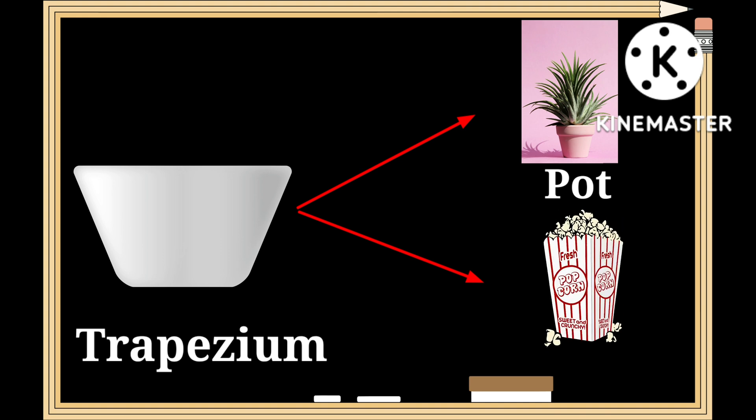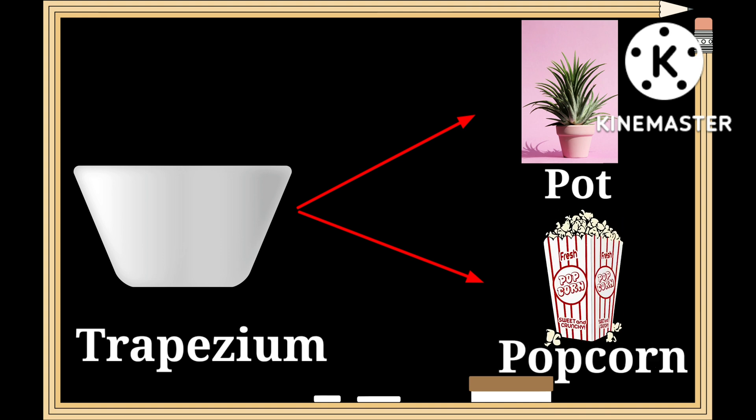This is a shape of a trapezium — t-r-a-p-e-z-i-u-m — where exactly one pair of opposite sides are parallel to each other. A pot and popcorn have a similar shape to that of a trapezium.